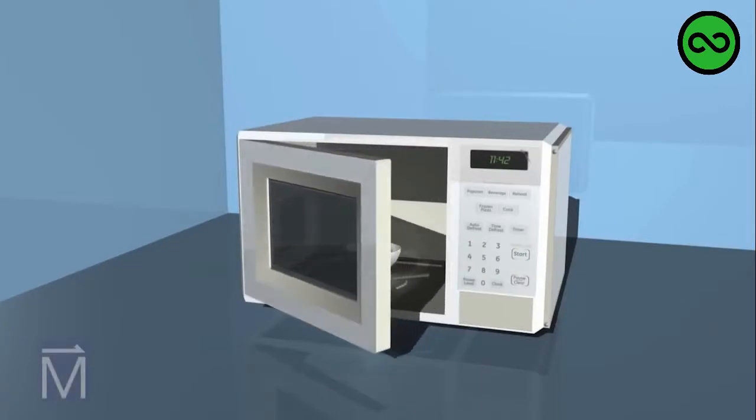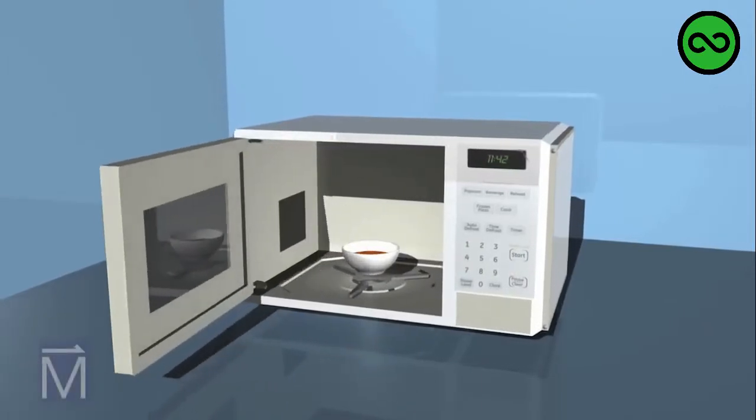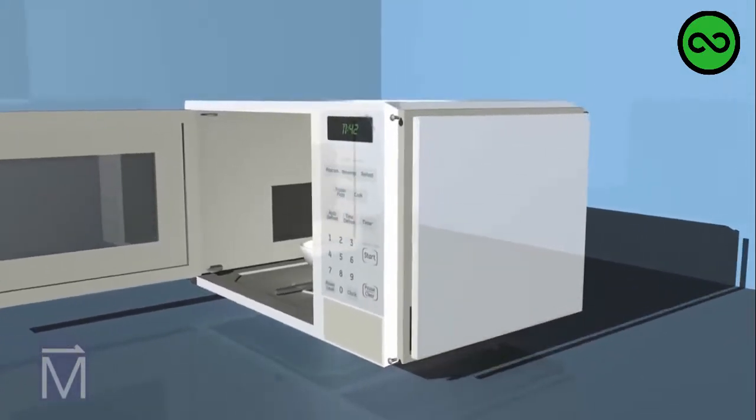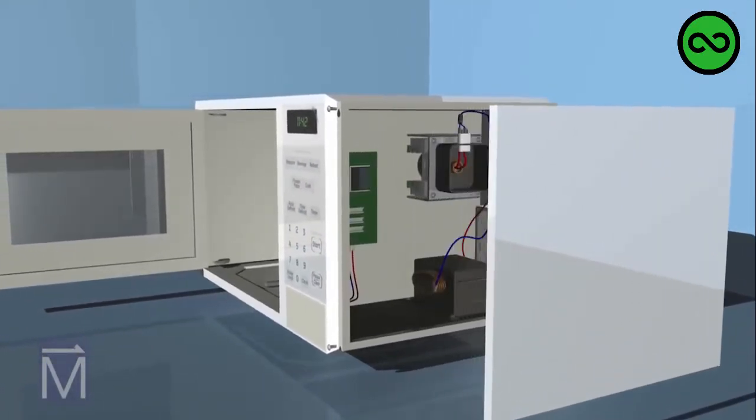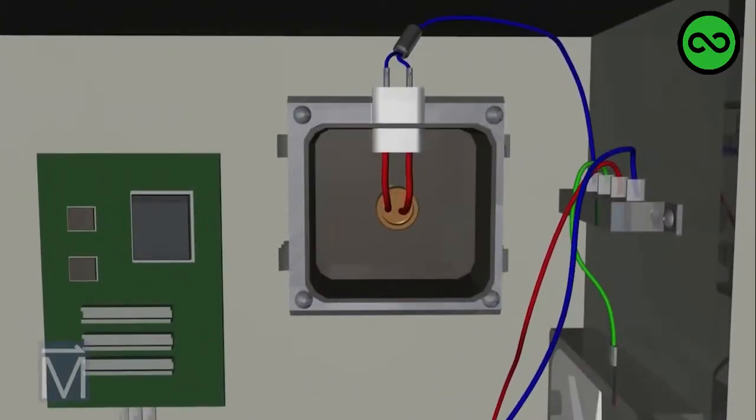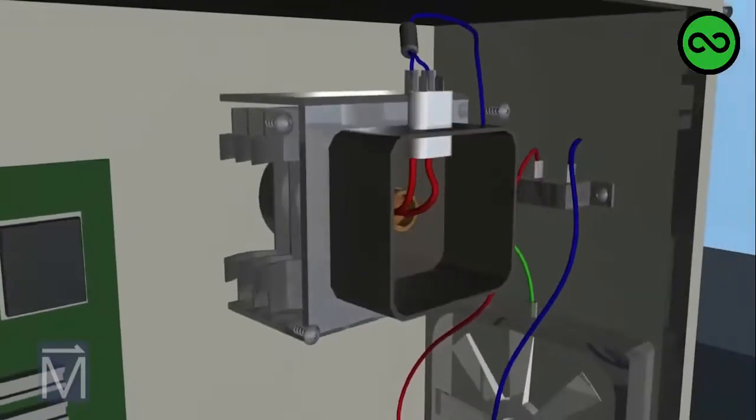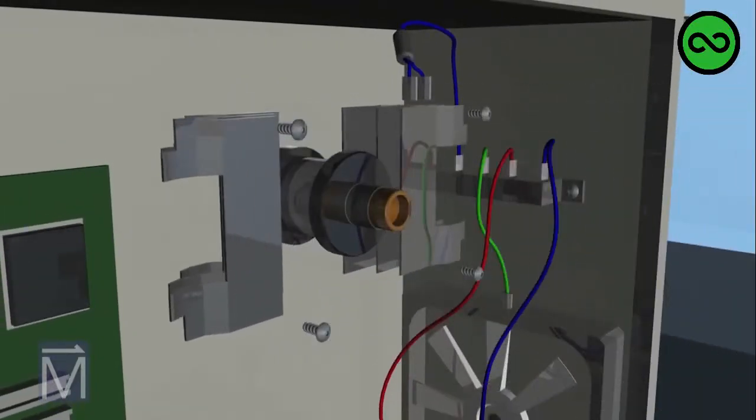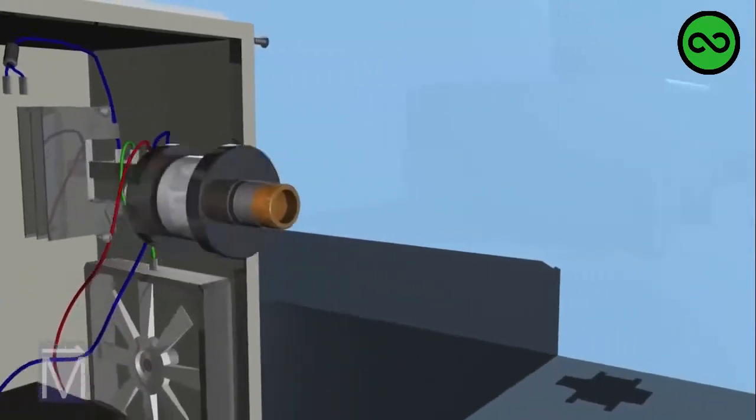This microwave oven should be a familiar sight. Most people have a microwave in their homes, but few know how they actually work. The secret is this device known as a magnetron. The magnetron consists of two permanent magnets flanking a copper ring.